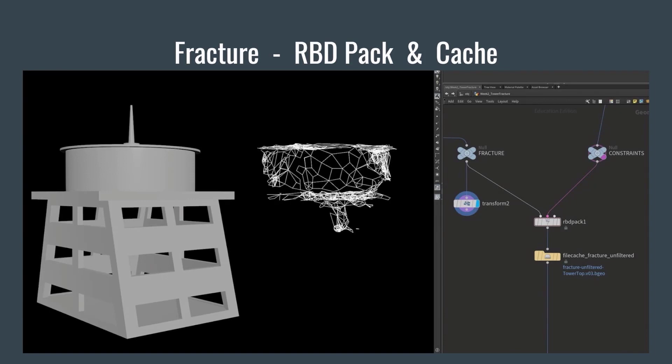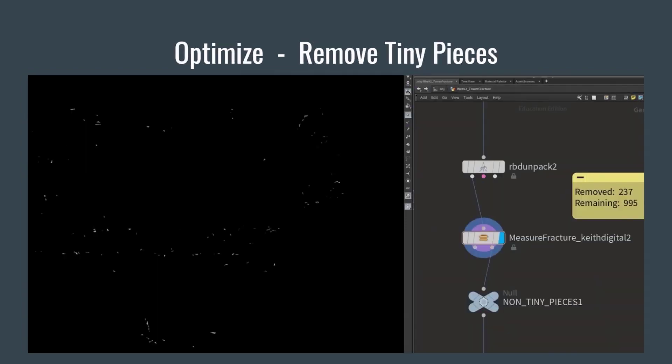It's essentially the same idea as the Vellum PAC and Vellum UNPACK. Before moving on to post-processing, I always cache this to disk in case we change our mind about post-processing later — we don't want to have to rerun the entire fracture every time we decide to post-process differently.